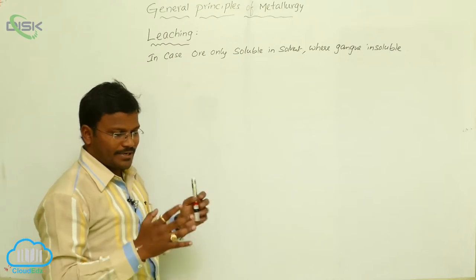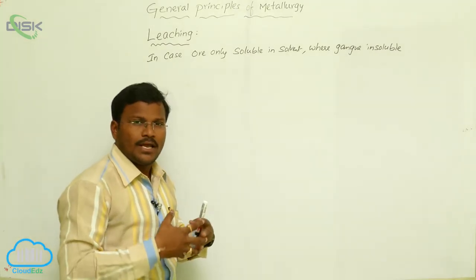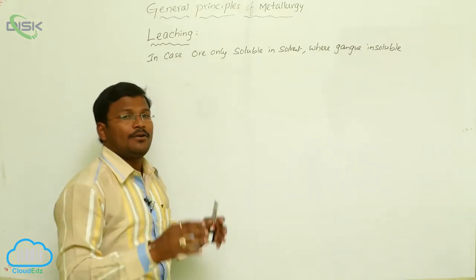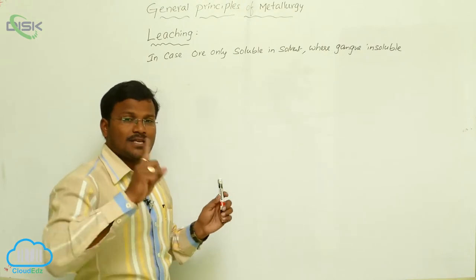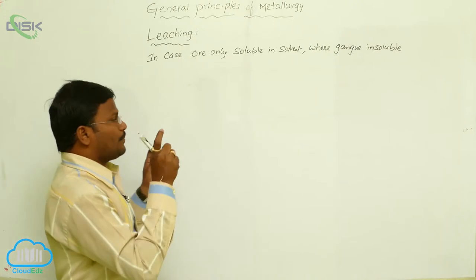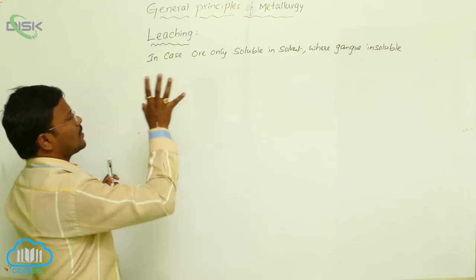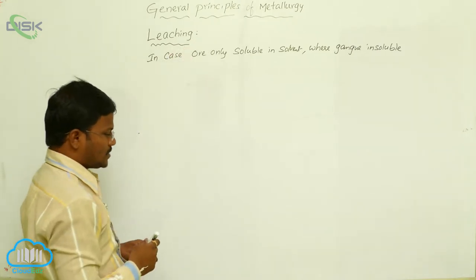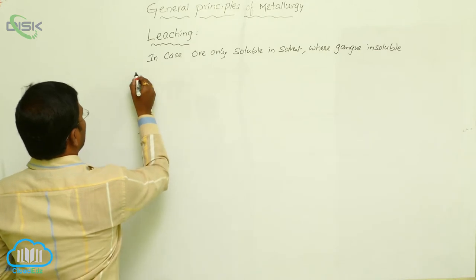During the process of concentration, if the gangue is insoluble in solvents and only the ore is soluble in solvents, for such type of ore with gangue, the best method for purification or concentration is the leaching process. Let us now consider some examples of leaching.